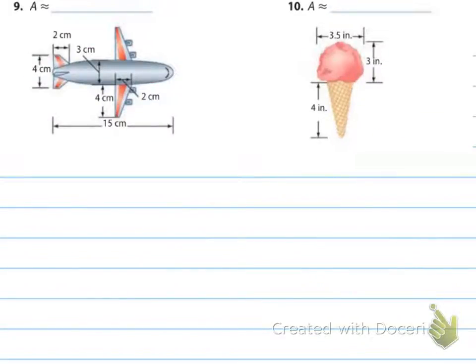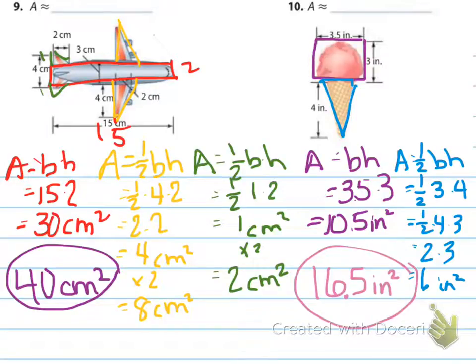Number 9 and 10, pause the video and come back with the answers. All right, the answer to 9 and 10 is 40 centimeters squared and 16.5 inches squared. Now, again, those are just my estimates, so you could have something similar, kind of close, and that's okay.